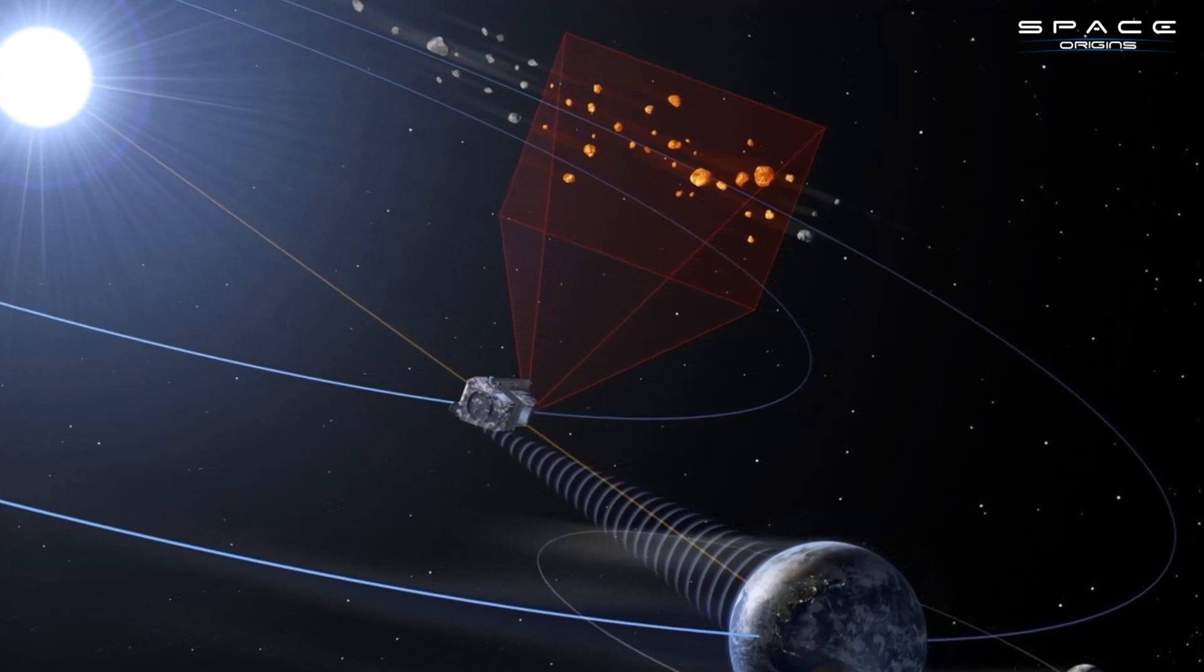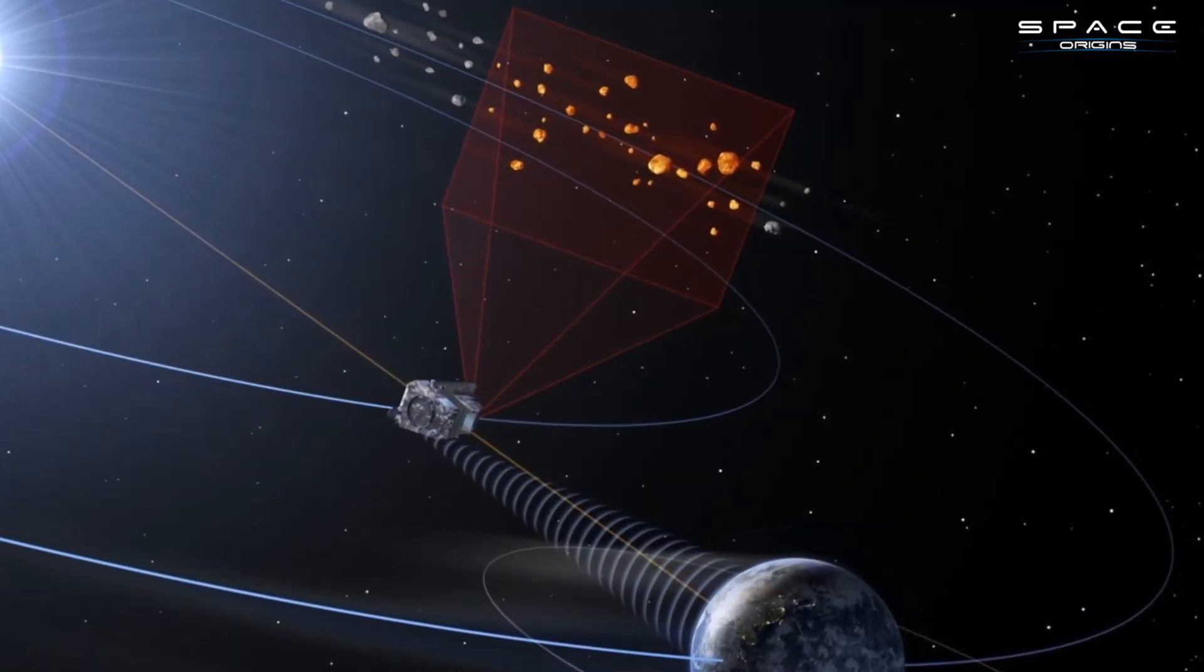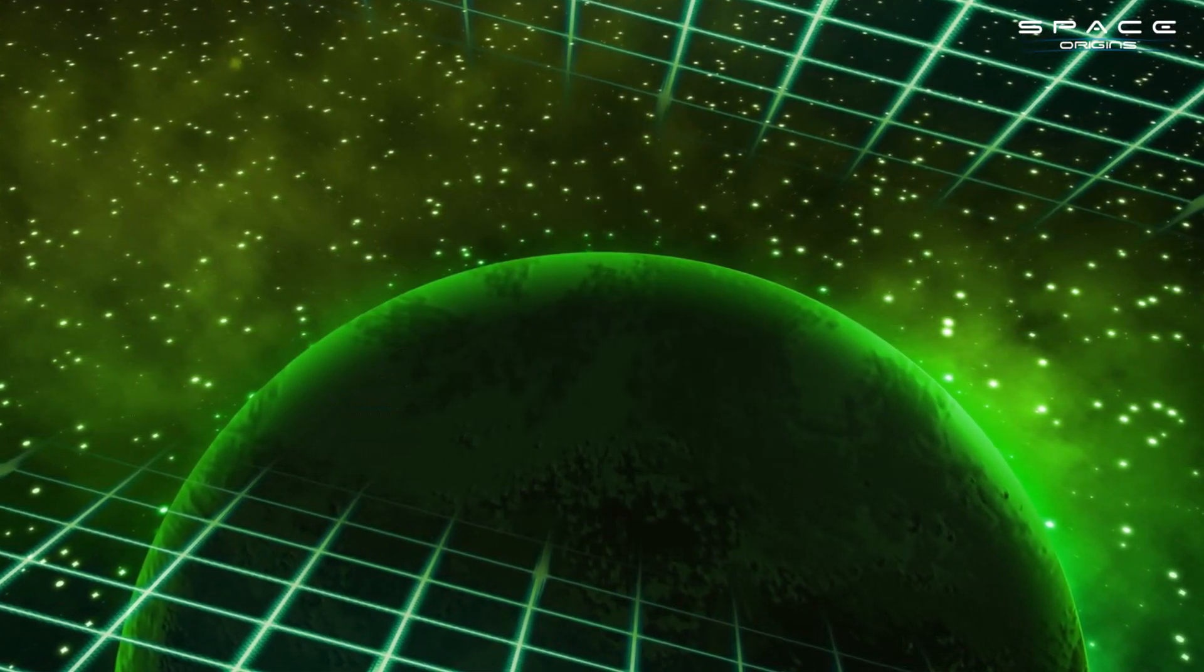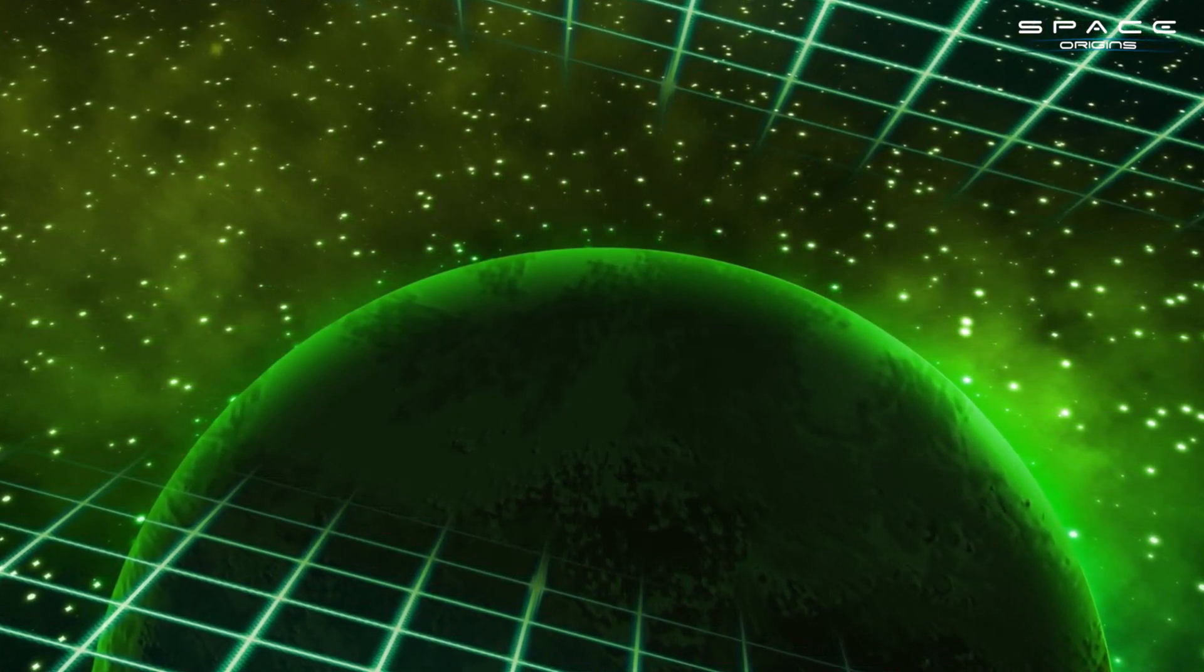Infrared light, a part of the electromagnetic spectrum that's invisible to the naked eye, can be detected by these telescopes. It's a bit like having night vision goggles in space, allowing us to see objects that would otherwise be hidden in the sun's glare.